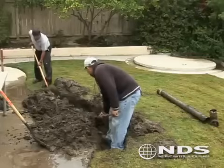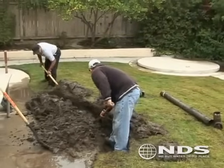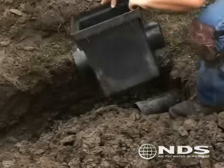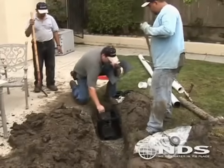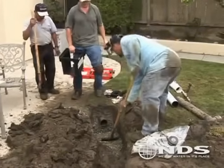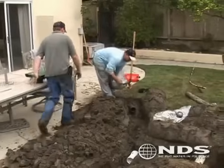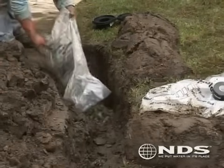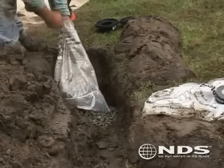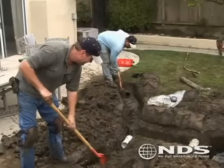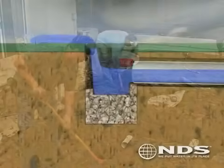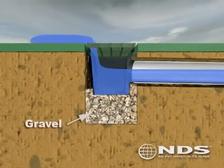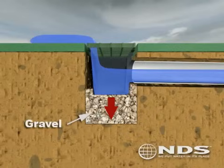Care must be taken while trenching to maintain a continuous slope with a minimum of peaks and valleys. For the catch basin, dig a hole with a depth equal to the height of the catch basin plus 3 to 4 inches. Drop in about 3 to 4 inches of crushed stone or gravel so that the top of the catch basin is level with the top surface of the landscape. Compacting the gravel will help reduce the settling of the basin. It is also important that the bottom of the basin has sufficient gravel to leach the water trapped in the sump area.